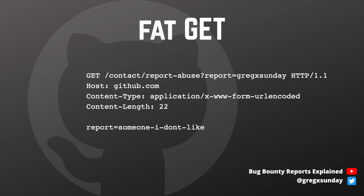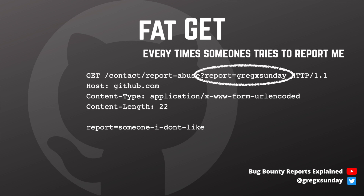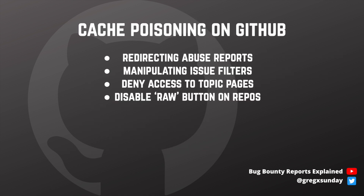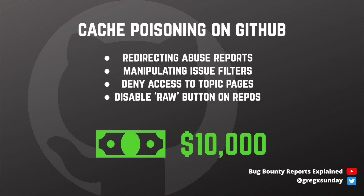What could you do with it on GitHub? For example, there is a report abuse functionality. You could poison the URL that would be used to report your account and redirect the abuse report to a completely innocent victim. You could also manipulate filters, deny access to topics, or disable the raw button on files. GitHub paid ten thousand dollars for this report.